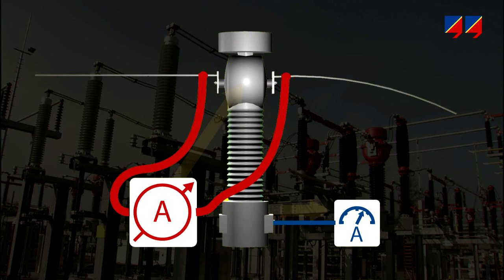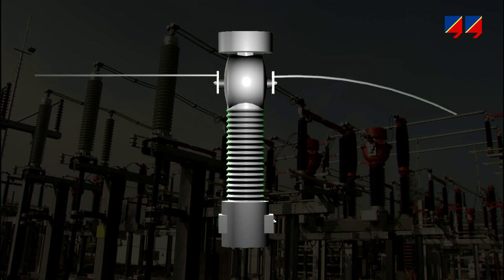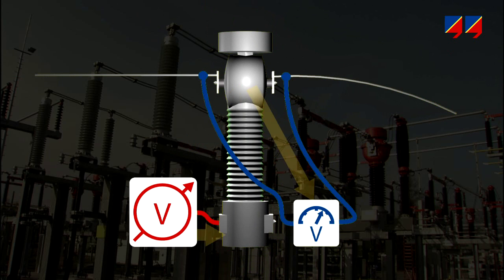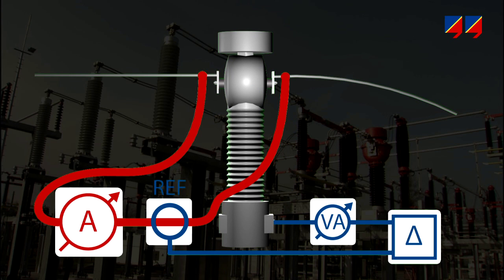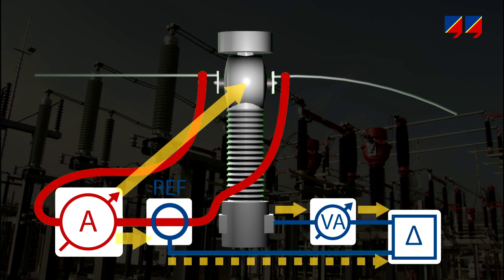The three methods are: primary current injection using a portable high current source; secondary voltage injection using a portable variac; and primary nominal current injection using a high current source, a reference CT, a burden simulator, and a bridge.